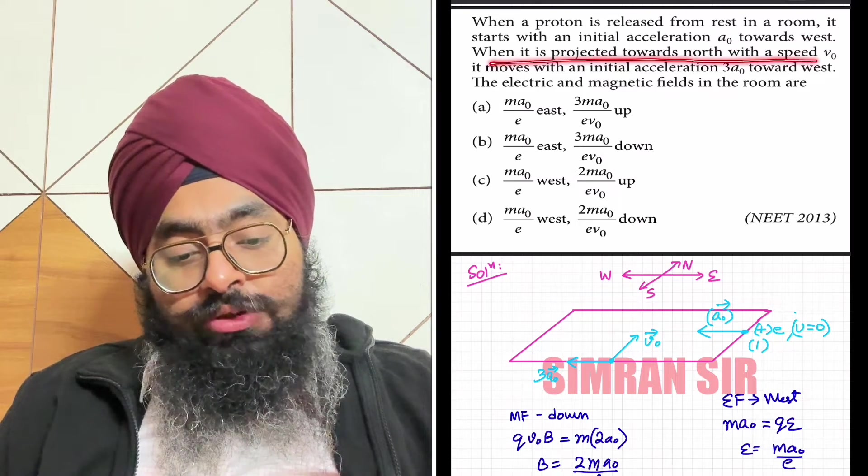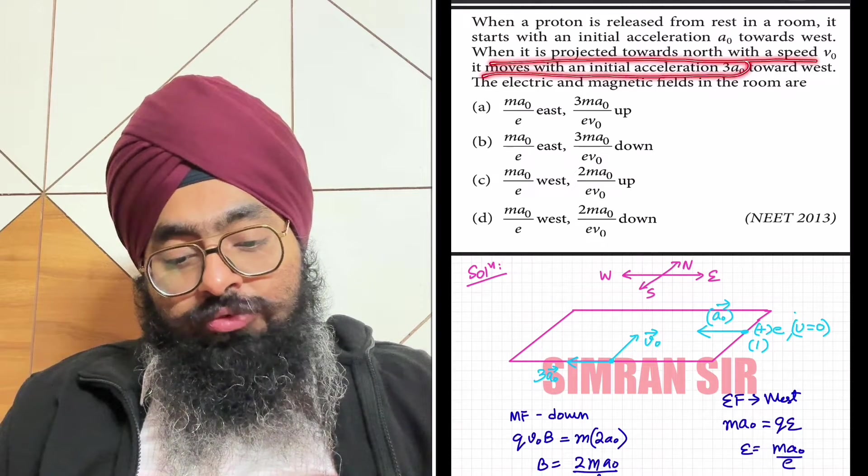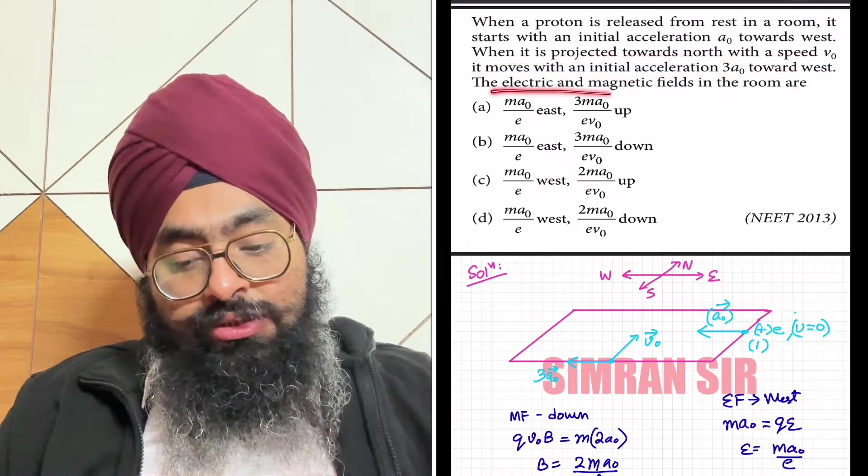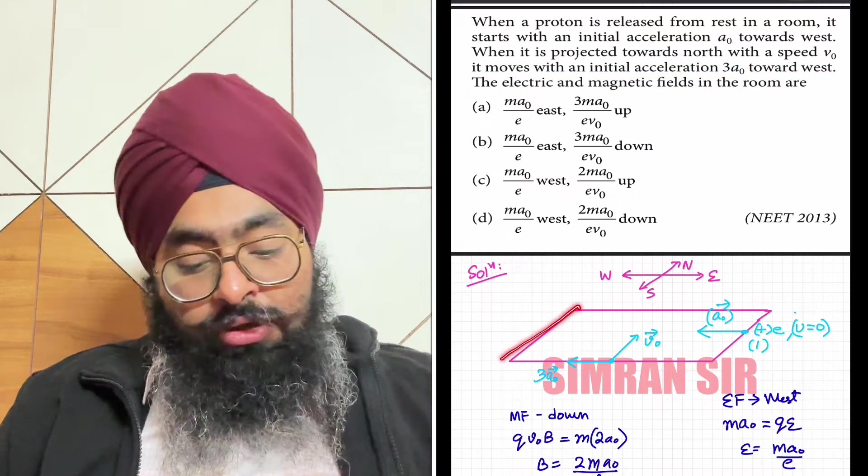When it is projected towards north with a speed v0, it moves with an acceleration of 3a0 towards west. The electric and magnetic fields in the room are to be found.